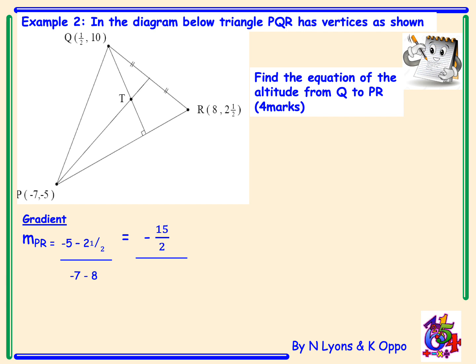Negative 5 take away 2.5 over negative 7 take away 8 will give us negative 15 over 2 divided by negative 15. This simplifies to give us a gradient of 1 half for the line PR.